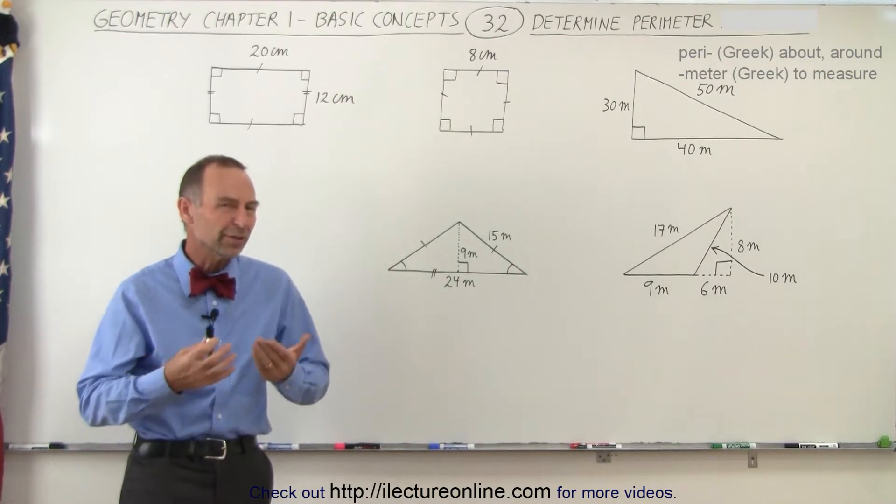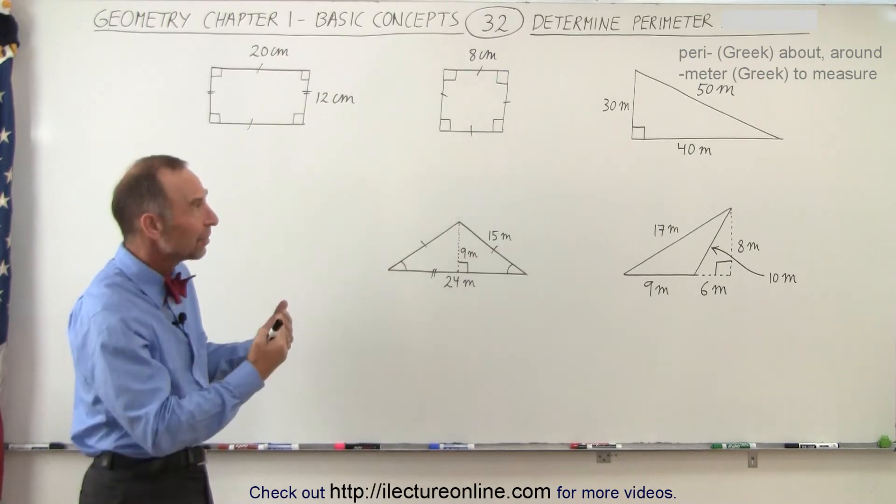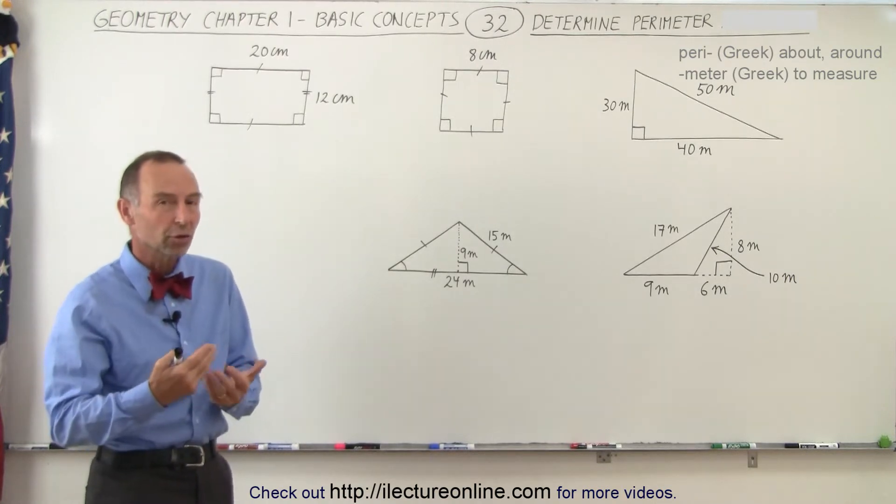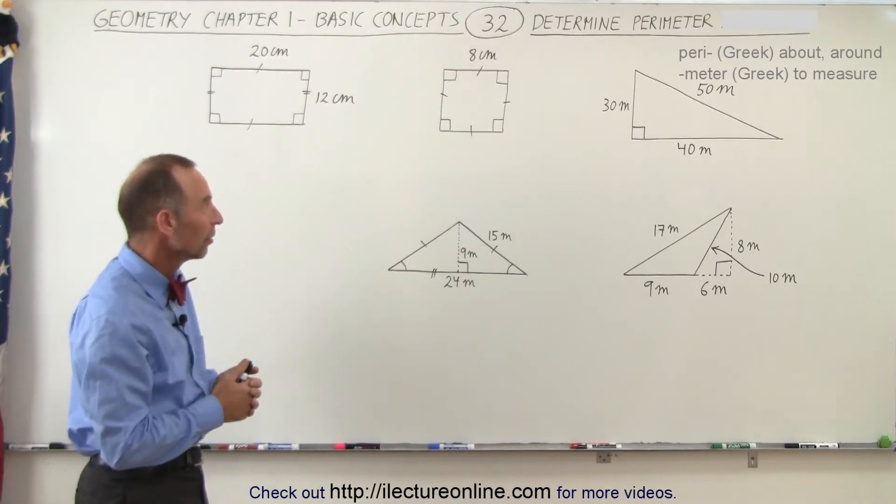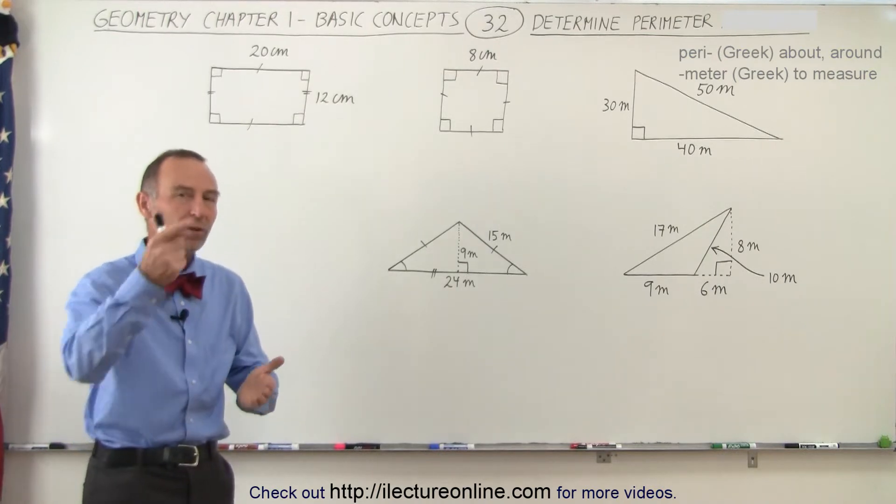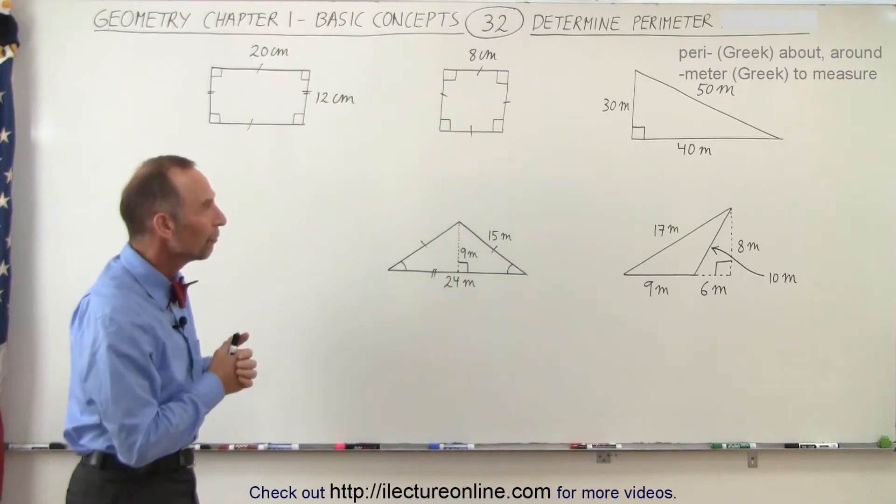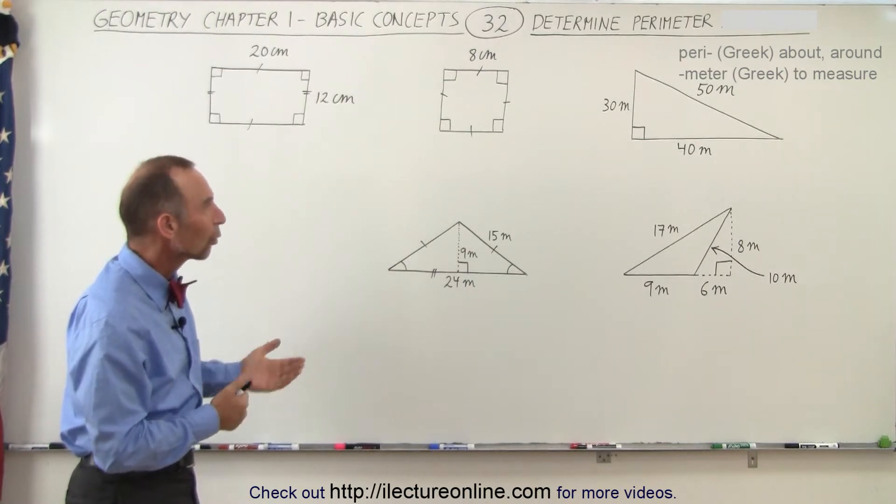The perimeter, what does that word mean? Peri means along the sides, and meter means to measure. So we're measuring the length along the sides of a polygon. Simply, we're going to add the length of each of the sides, add it together, and that's what's called the perimeter of a polygon, or in this case, a quadrilateral or a triangle.